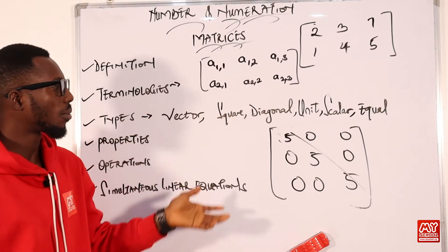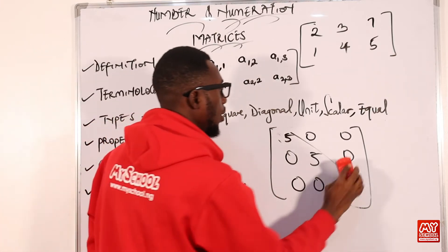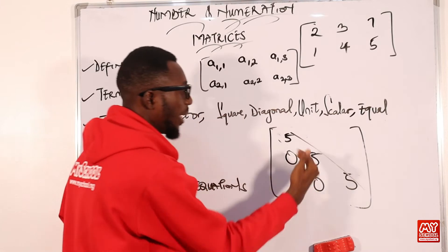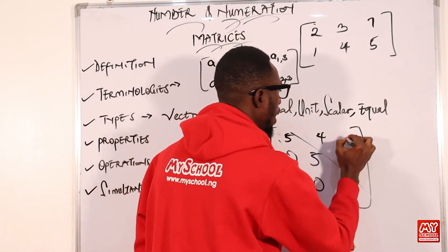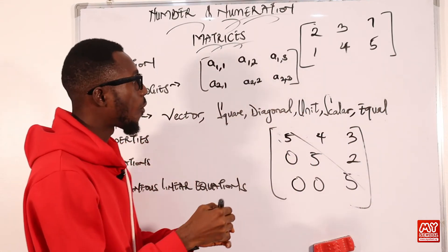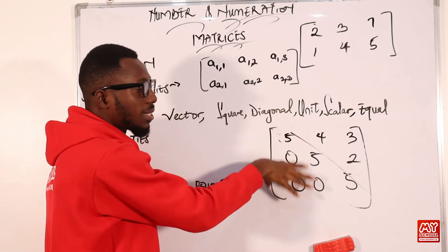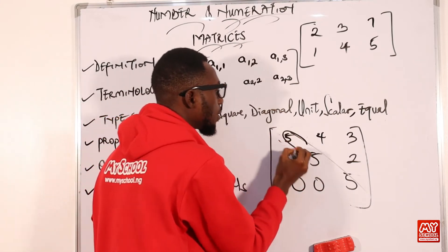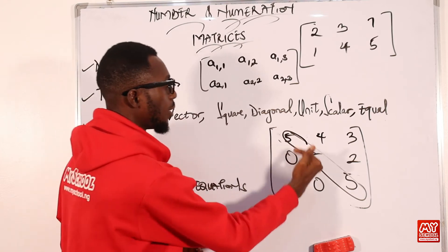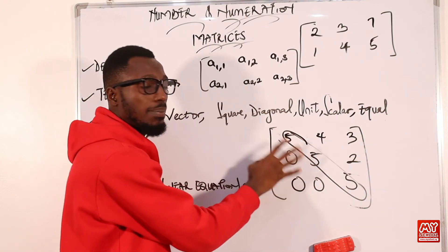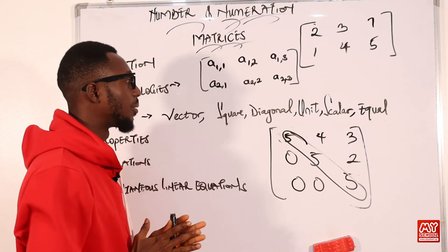For an upper triangular matrix, every spot beneath the principal diagonal is filled with zero, while above the diagonal can be filled with any numbers. For a lower triangular matrix, the opposite happens — the lower side beneath the principal diagonal is filled with non-zero values, and the upper side above the diagonal is filled with zeros.